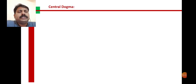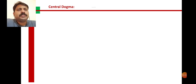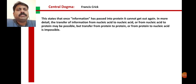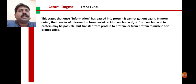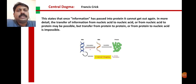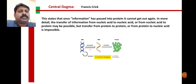The Central Dogma of Molecular Biology was proposed by Francis Crick. As per Crick's statement, the Central Dogma states that once information has passed into protein, it cannot get out again — this is a one-way, continuous flow of information. The DNA strand, through transcription, produces RNA, and from RNA through translation, proteins are synthesized. This is a one-way process where information cannot flow back.